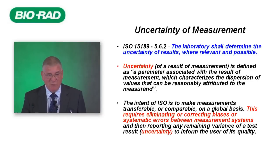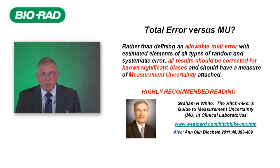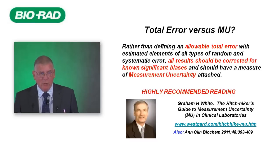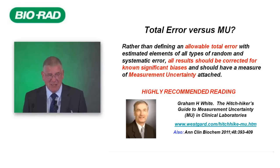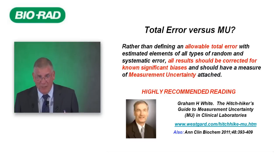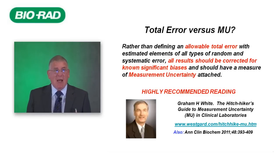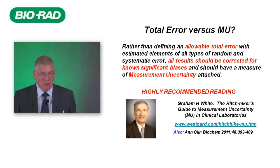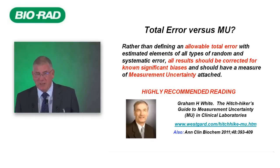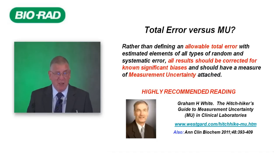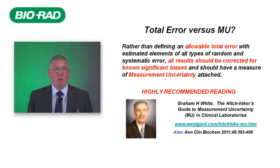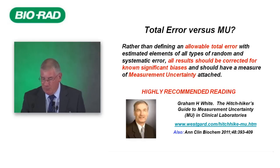As we've already seen this morning, this involves adding together uncertainties as variances. Our remit was total error versus measurement uncertainty. But rather than defining an allowable total error with estimated elements of all types of random and systematic error, in my opinion where possible all results should be corrected for known biases and should have an estimate of measurement uncertainty attached. For a really good, easy guide to measurement uncertainty, I highly recommend the article by Graham White from Flinders Medical Centre in Adelaide on Jim Westgard's website, who has done a tremendous amount to translate the real difficulties of uncertainty of measurement into practical tools for the practicing laboratory.